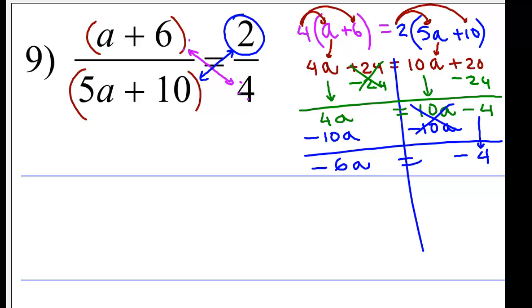Last step is divided by the coefficient of a, which is negative 6. So, a equals negative 4 divided by negative 6, going to give you a positive 0.6 repeating. But you can write it 0.67.